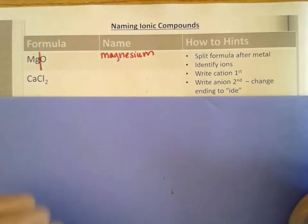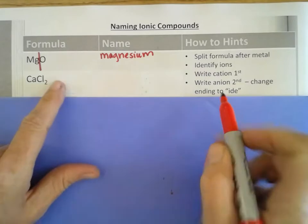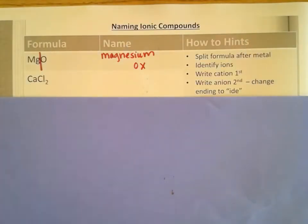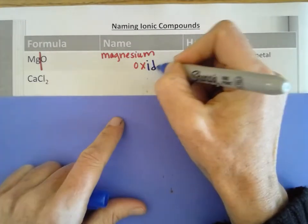We're going to write the second one. We're going to change the ending to IDE. So instead of oxygen, it's going to become oxide. And we're done.